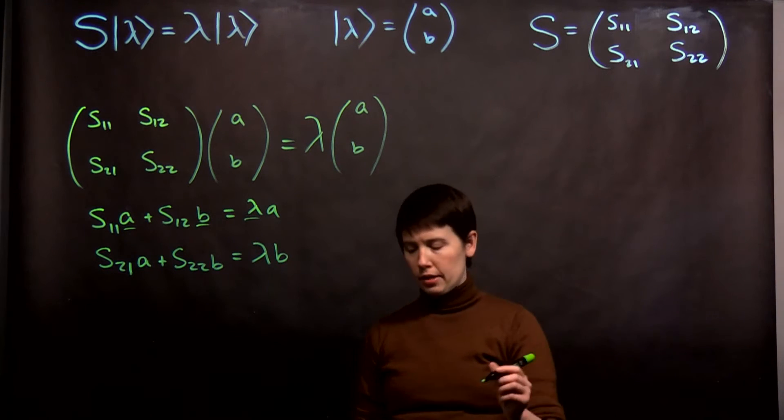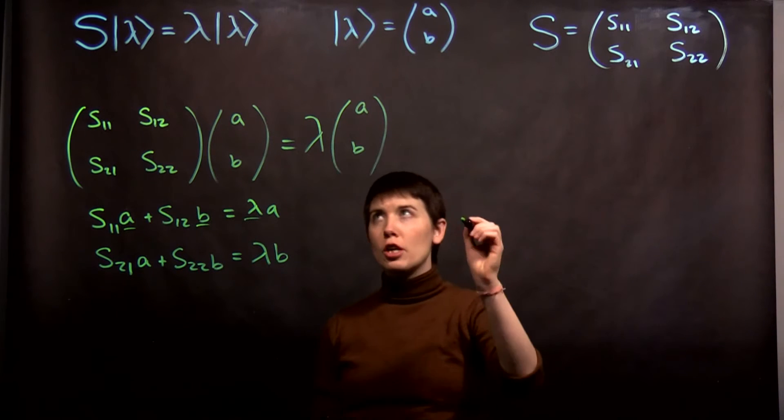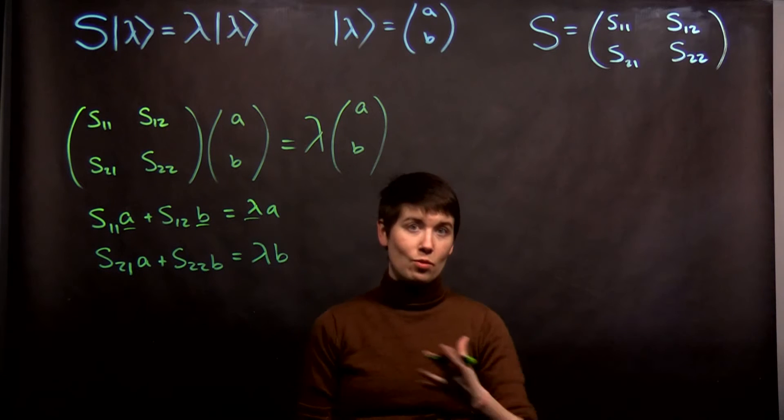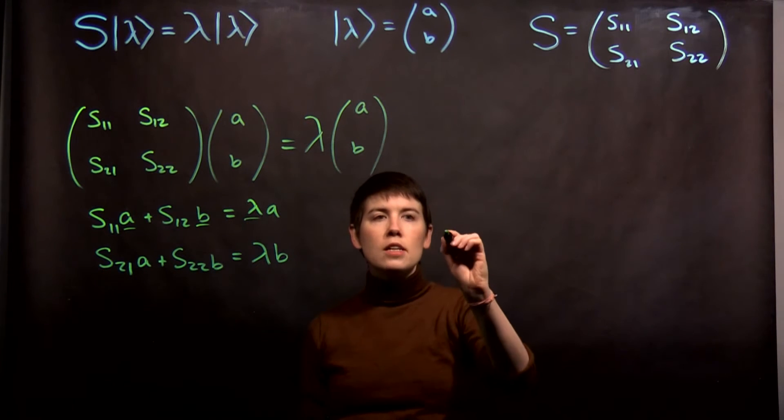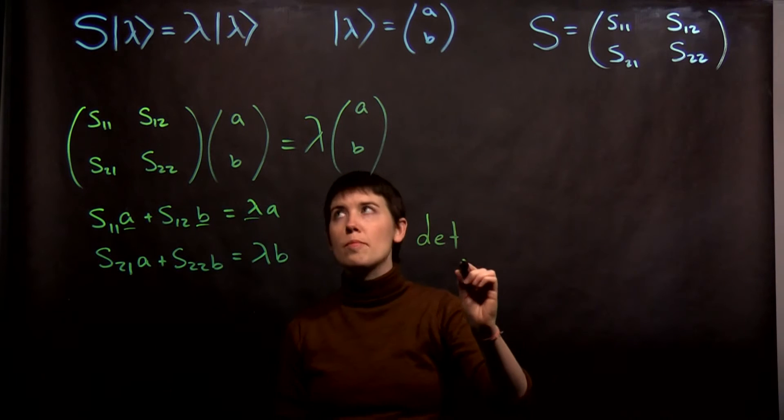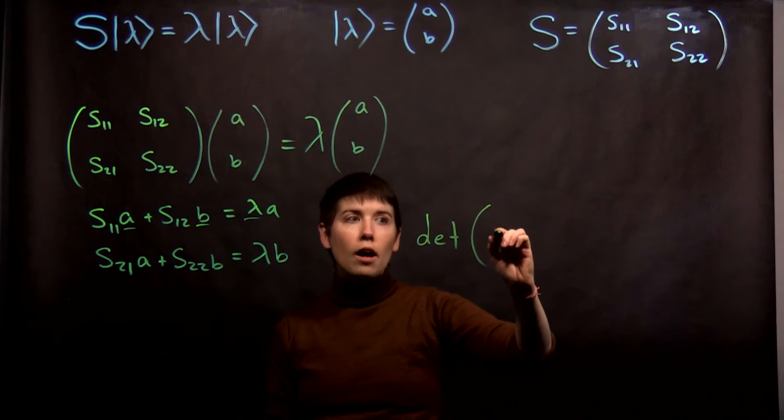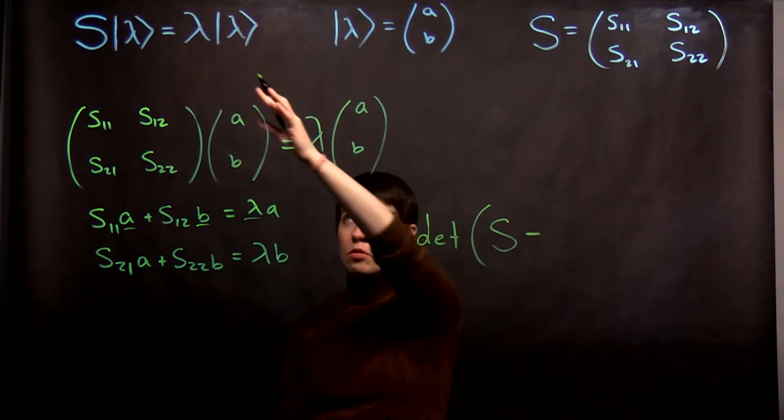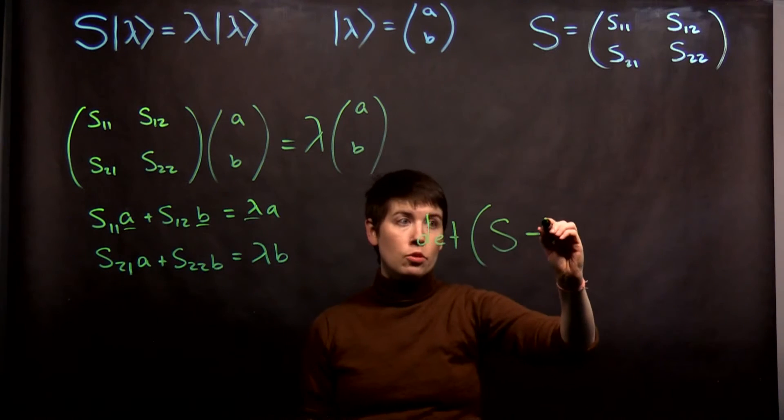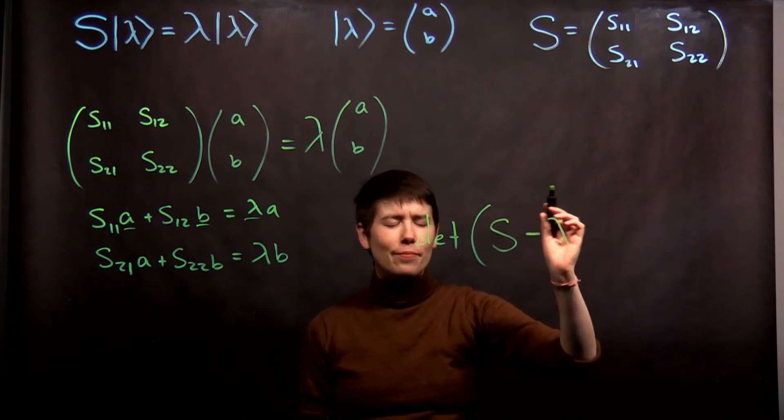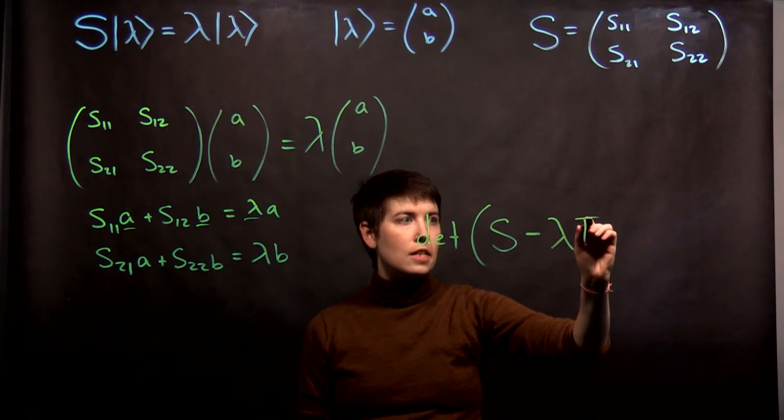And how this is going to work is that you have the determinant. I'm not going to prove where this is going to come from, this isn't a math class, so I'm saying here's the tool to use. You want to take the determinant, this is why we were talking about determinants earlier, of your operator S minus the eigenvalue you're looking for times your identity matrix.